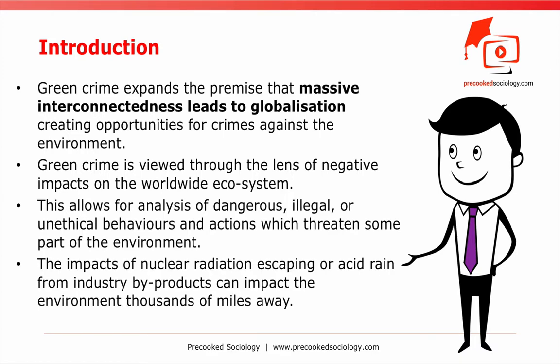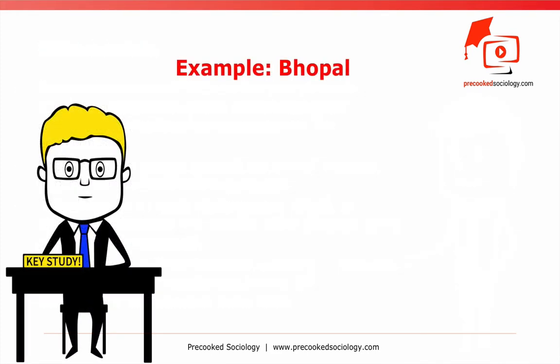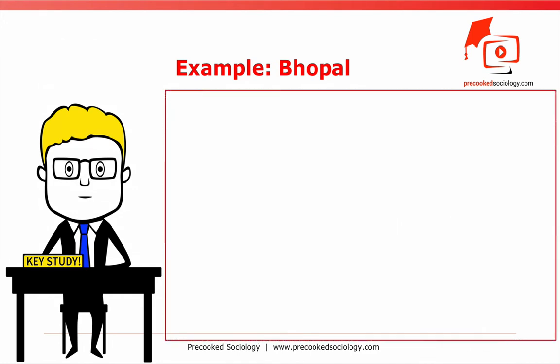The impacts of nuclear radiation escaping, or acid rain from industry byproducts, can impact the environment thousands of miles away. A prime example of the essential suppositions of green crime can be found in the December 2, 1984, Union Carbide Bhopal, India Plant Environmental Disaster.